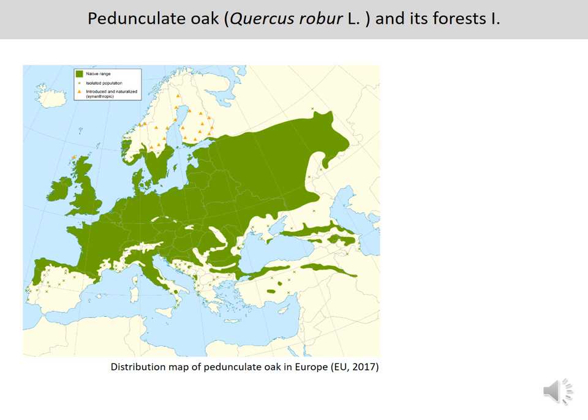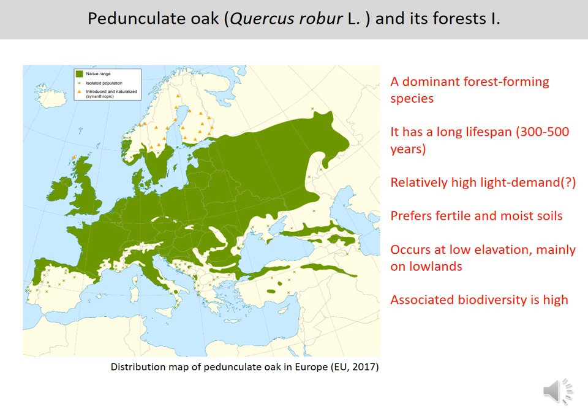Quercus robur has a wide distribution range in Europe; it's a forest-forming dominant species with relatively high light demands. It occurs mainly at lower elevations and has very high associated biodiversity. As most of you know, it's an iconic species in Europe with high cultural and economic value as well.